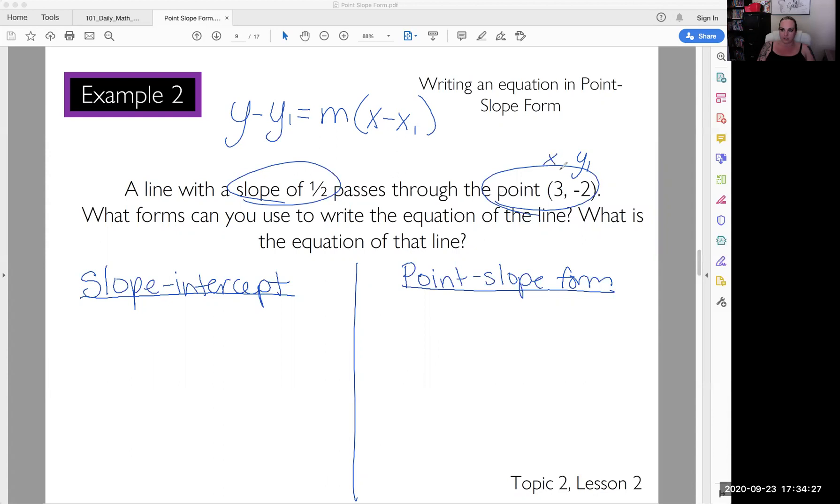So x1 being this. Let's substitute these in. y minus y1 is negative 2. This formula calls for the negative. So you don't just go, oh well, it's already there. I just need to put a 2. No, it's y minus that y value. So you need to put another negative because it's attached to the 2.